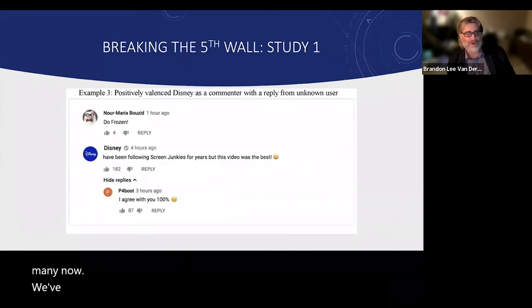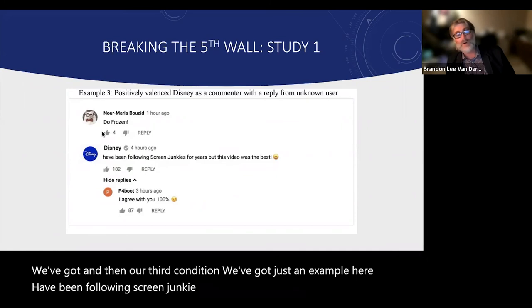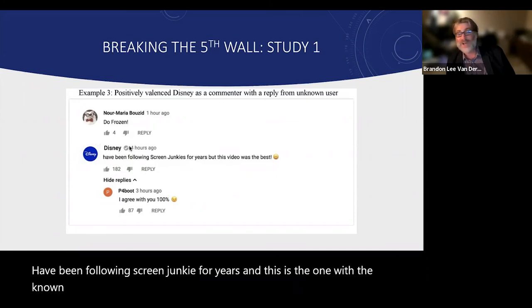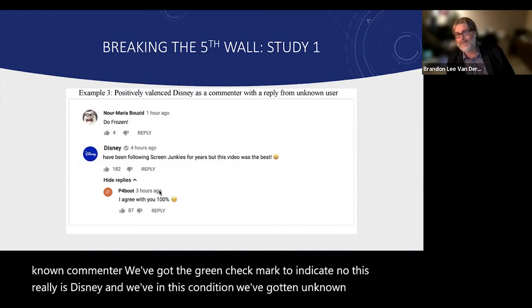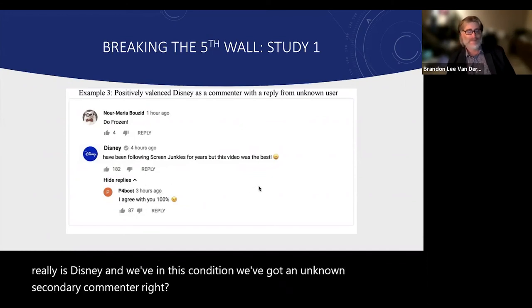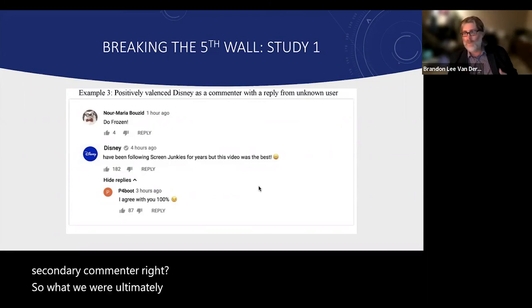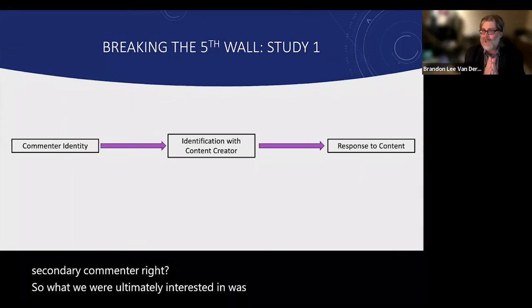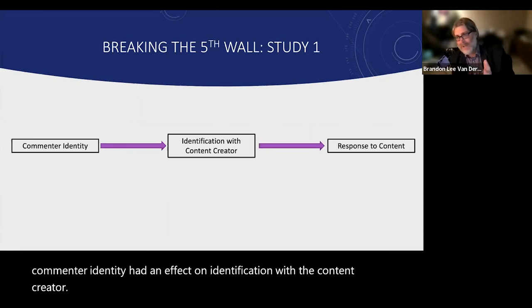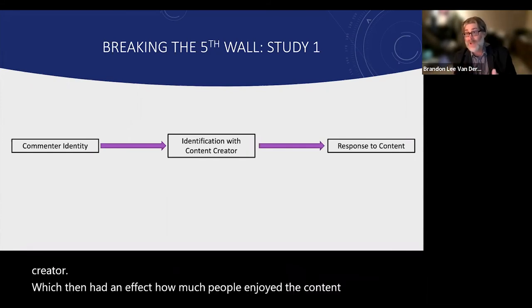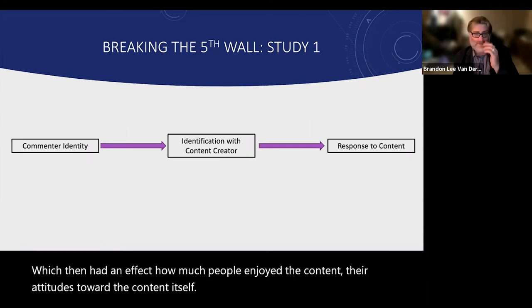In the third condition, we had a known commenter with a gray checkmark to indicate this really is Disney, paired with an unknown secondary commenter. What we were ultimately interested in was the mechanism by which commenter identity had an effect on identification with the content creator, which then had an effect on how much people enjoyed the content and their attitudes toward it.